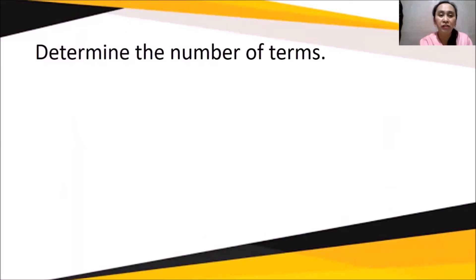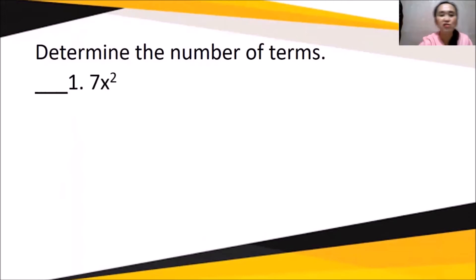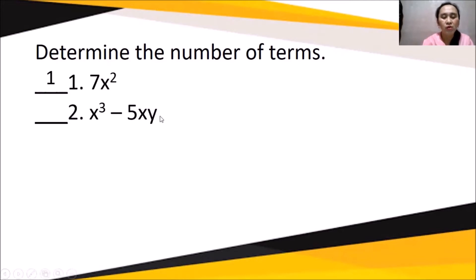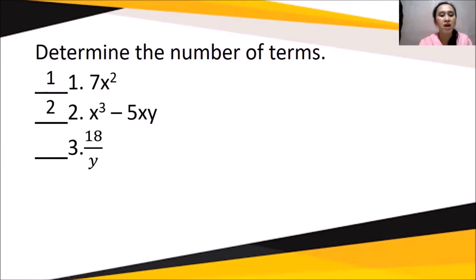Let's determine the number of terms. In the first example, there is no plus or minus sign, so it is understood to be one term. In number two, there is one minus sign, giving us two terms. In number three, it involves division, so as stated before, it is considered one term.